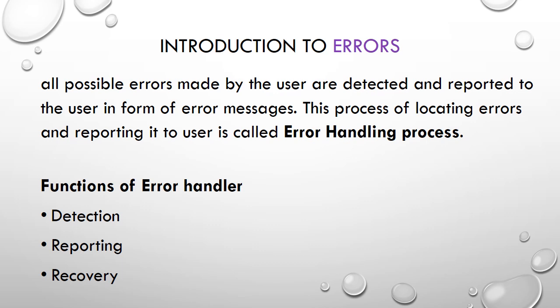We need to recover from those errors as well. If some error has been made in one statement, we need to move ahead and find the errors made in the other statements also. What the compiler does is that it takes the program as a whole, then tries to find out errors from the entire program sentence by sentence, and reports all the errors at once.